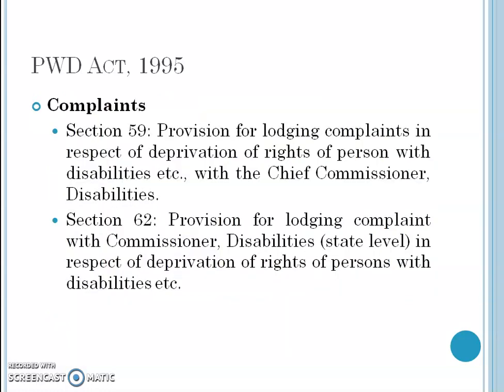Regarding complaints about violation of their rights: Section 59 provides for lodging a complaint about deprivation of rights of a person with disability with the Chief Commissioner for Disability, a separate designated official who deals with complaints from people with disability whose rights have been violated. Section 62 provides for lodging a complaint with the Commissioner for Disability at the state level — every state has a Commissioner for Disabilities where persons can lodge their complaints.